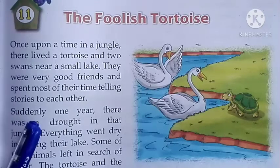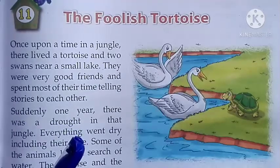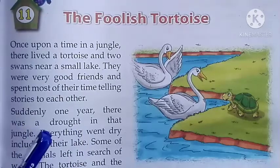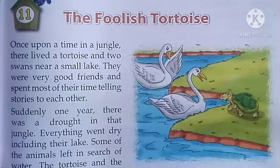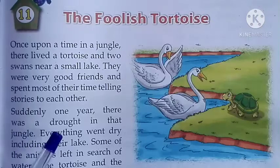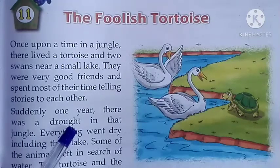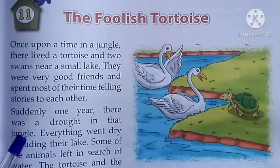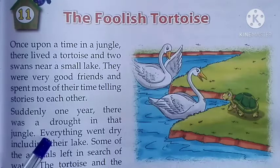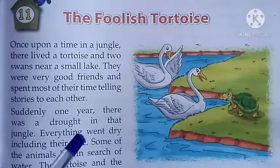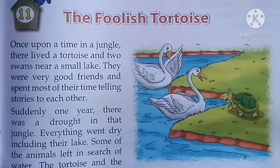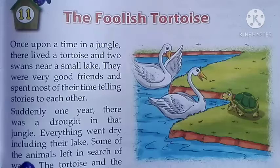Suddenly one year there was a drought in that jungle — अचानक एक साल उस जंगल में सूखा पड़ा। Drought means सूखा। Everything went dry including the lake — सब कुछ सूख गया, ऐसा सूखा पड़ा कि जील सहित सब कुछ सूख गया।